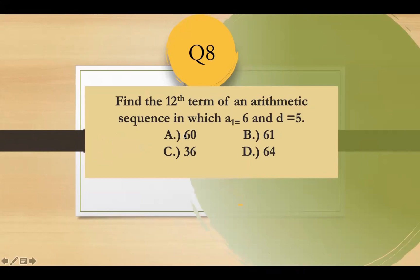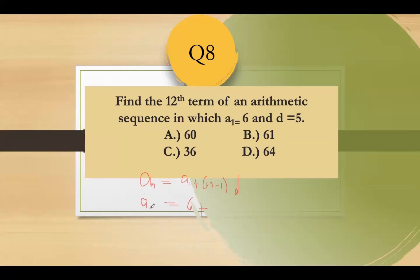Question number eight: find the 12th term of the arithmetic sequence where a1 = 6 and d = 5. Using the formula a_n = a1 + (n-1)d, substitute: a12 = 6 + (12-1) × 5 = 6 + 11 × 5 = 6 + 55 = 61. The answer is letter B.